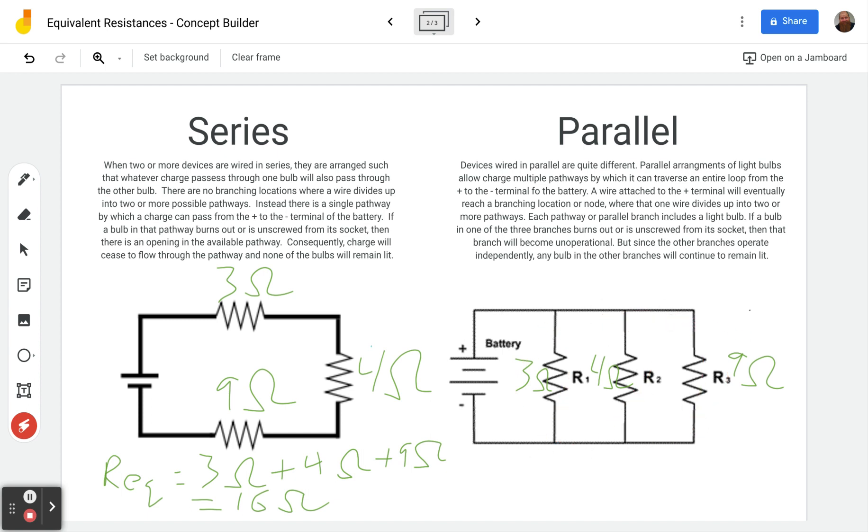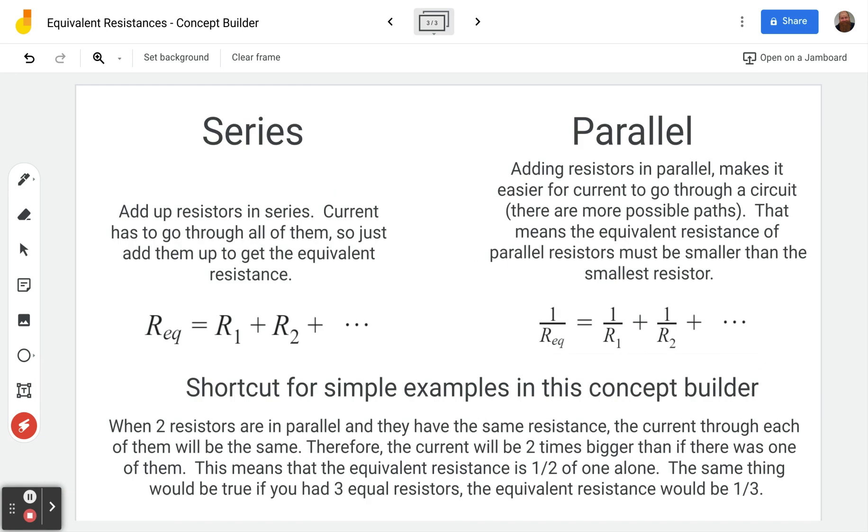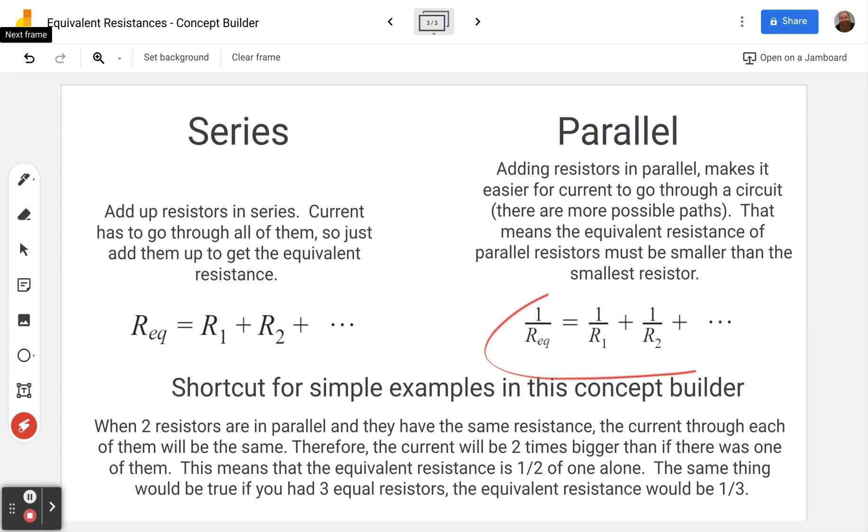So it'll be less than 3, 2 point something, 1 point something. I didn't even bother to calculate it because that's not the point of this concept builder. If you did want to calculate it, you use this equation. You do 1 over 3, 1 over 4, plus 1 over 9. You find some common denominators, you add up your exponents, you divide and then don't forget to flip it in the end because this is solving for 1 over the equivalent resistance. But that is not essential for this particular concept builder.